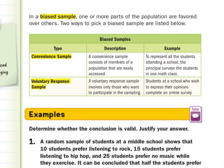For a voluntary response sample, it involves only those who want to participate. Such as: call this number to give your opinion, or go online and complete a survey to win a $200 gift card. Students at a school who wish to express their opinions complete an online survey. If it's voluntary and whoever replies replies, you only get certain opinions — oftentimes negative feedback. People who volunteer information want their voices heard. Sometimes with voluntary responses, you will have a biased sample.